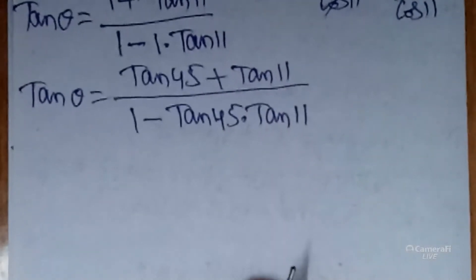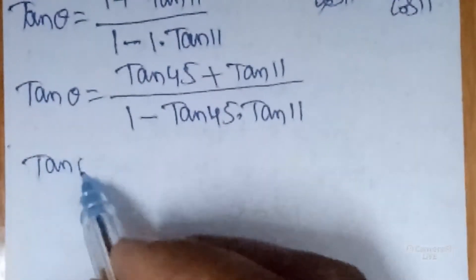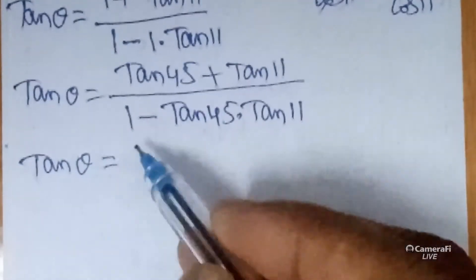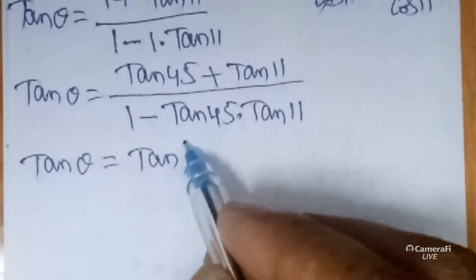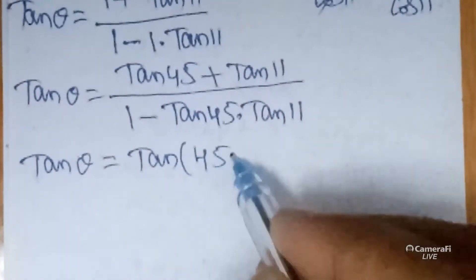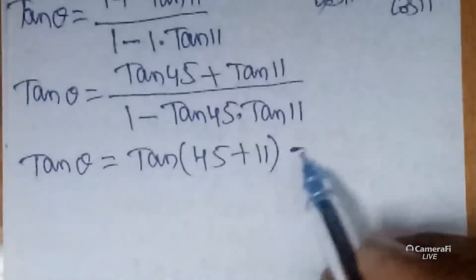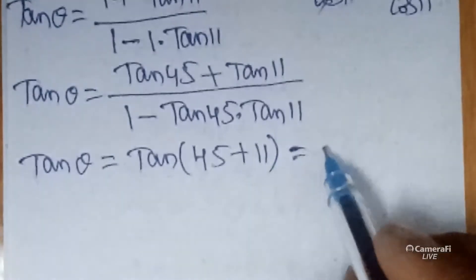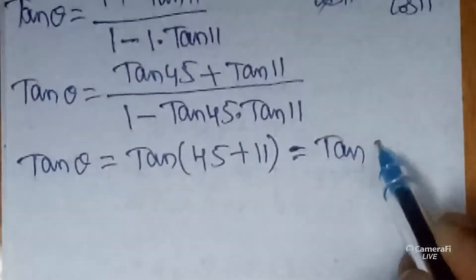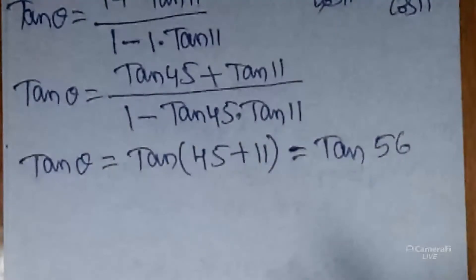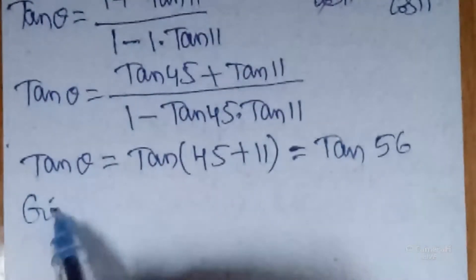According to that formula, tan(A + B) = (tan A + tan B) / (1 - tan A·tan B). Here A = 45 and B = 11. So tan θ = tan(45 + 11) = tan 56.